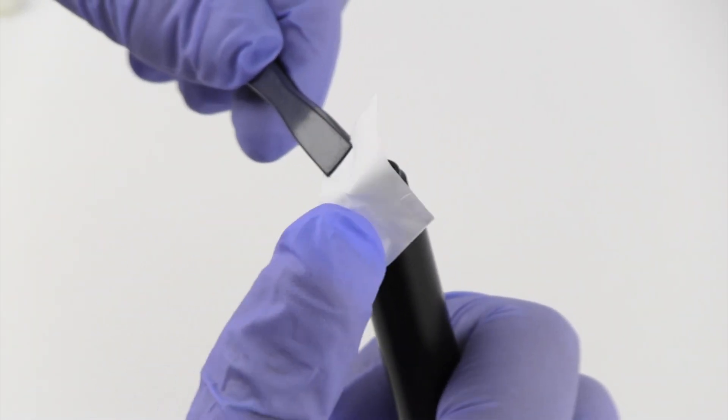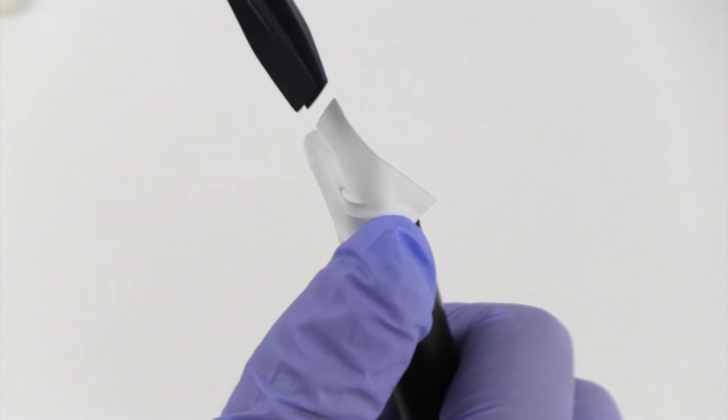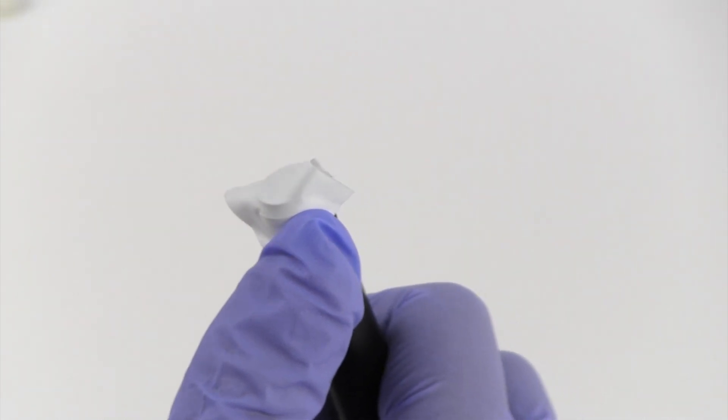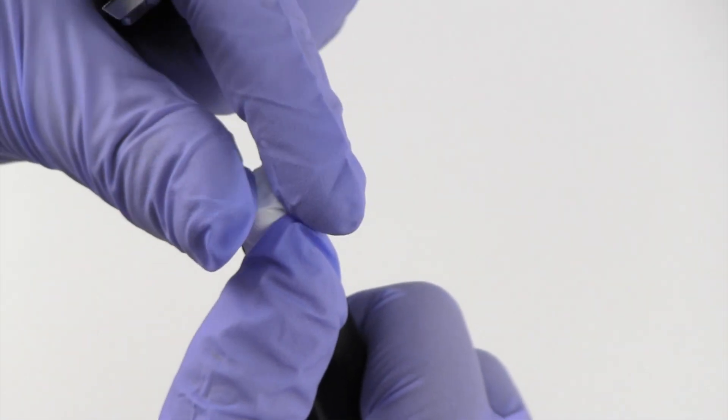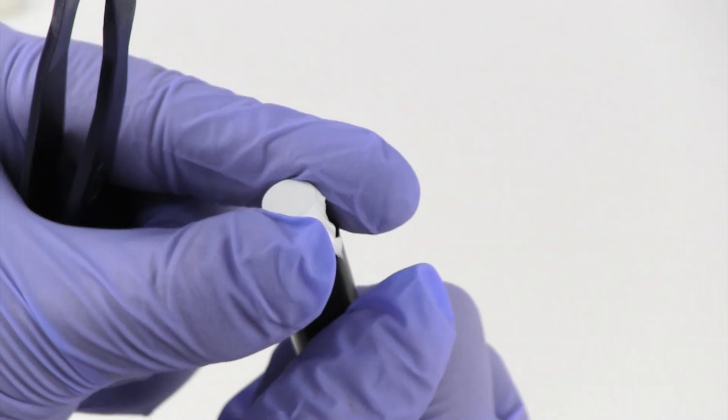Lay the membrane down on the end of the outer probe body. Using your thumb, hold one corner against the threads and with the tweezers, gently stretch the membrane over the end of the outer probe body.